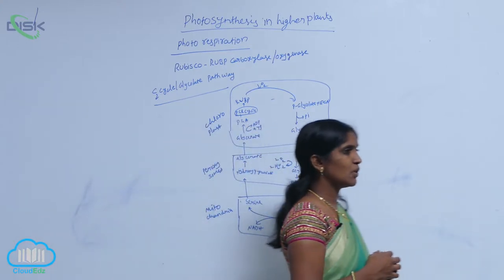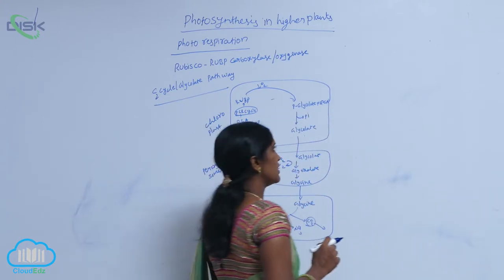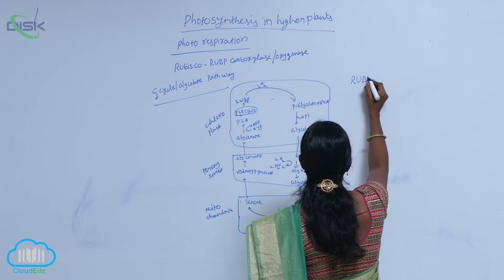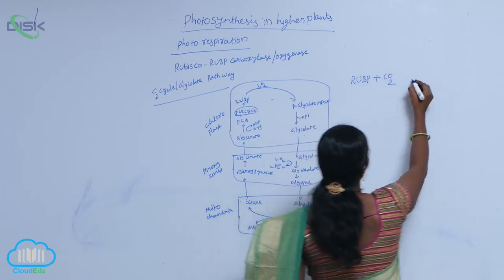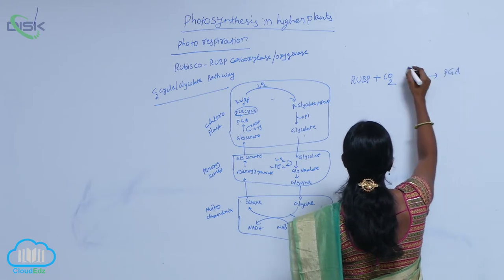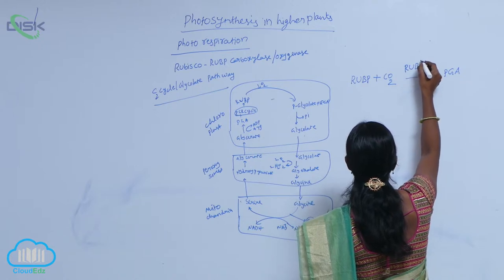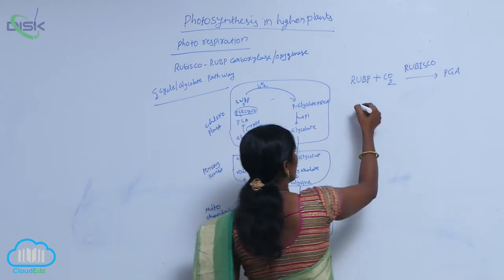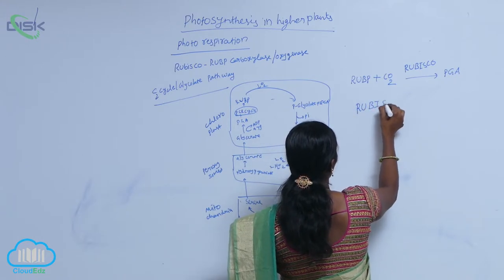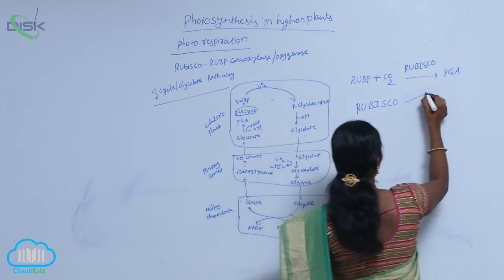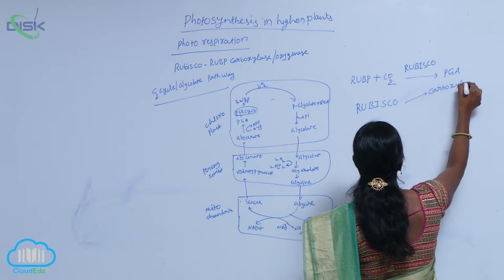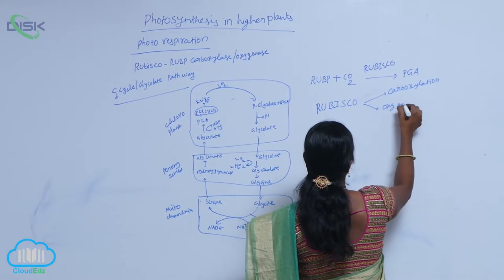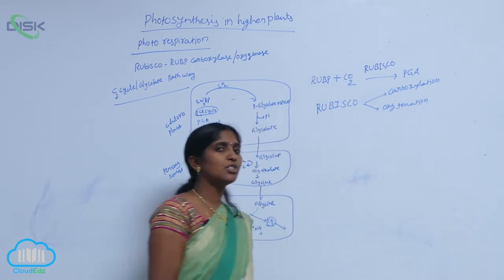To understand photorespiration, we first need to know about the Rubisco enzyme. In the C3 cycle, RuBP takes CO2 and produces PGA in the presence of RuBP carboxylase and oxygenase, also called Rubisco enzyme. The Rubisco enzyme plays a dual role: one role is carboxylation as carboxylase, and the other is oxygenation as oxygenase.